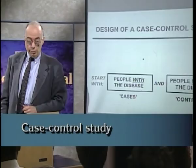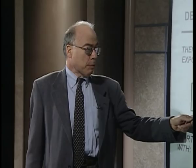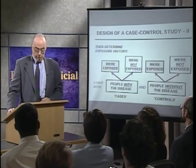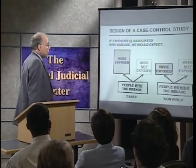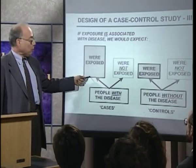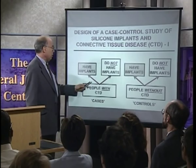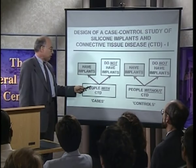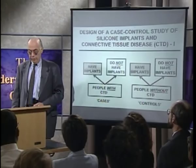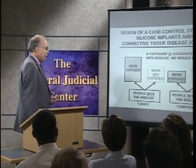We then determine the history of exposure: what proportion of people with the disease were exposed in the past, and what proportion of people without the disease were exposed in the past. If exposure is indeed associated with disease, we would expect a greater proportion of the cases to have had a history of exposure than of the controls. In a case-control study of implants, we would first identify a group of women with connective tissue disease and a comparison group without it, then determine what proportion of the women with connective tissue disease have a history of receiving implants compared to women without connective tissue disease.